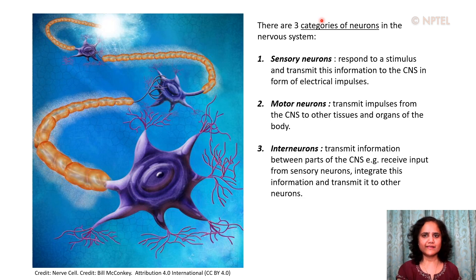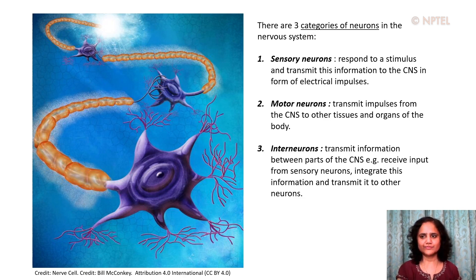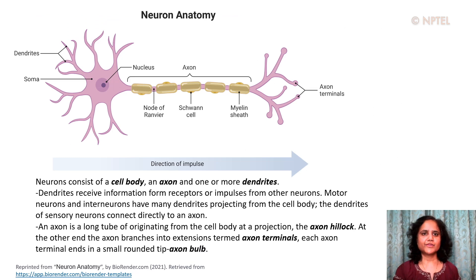Nerve cells are highly differentiated and have processes such as axons — this long process is referred to as an axon — and dendrites that connect with other cells for communication. The dendrites are relatively shorter projections, whereas the axons can be very long. Shown here is the structure of a neuron, which consists of a cell body, an axon, and one or more dendrites.